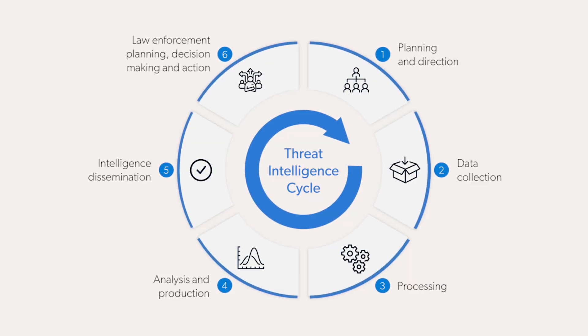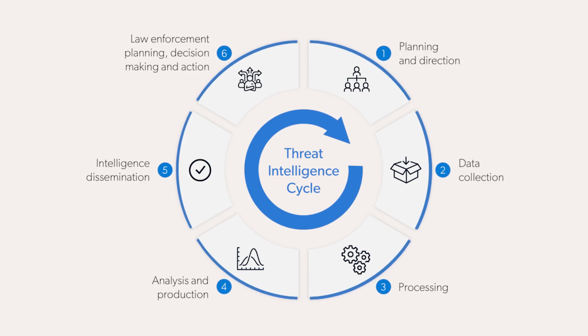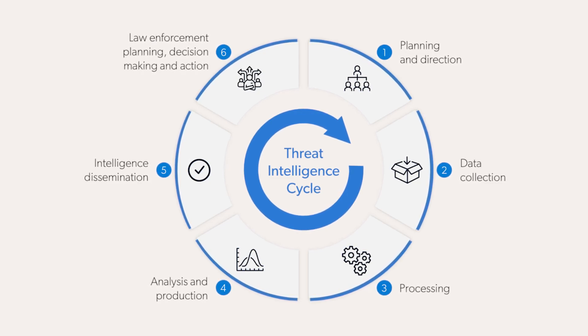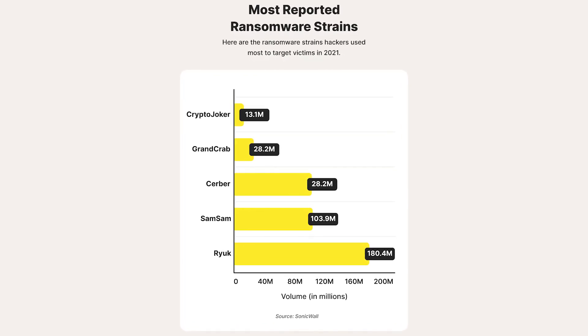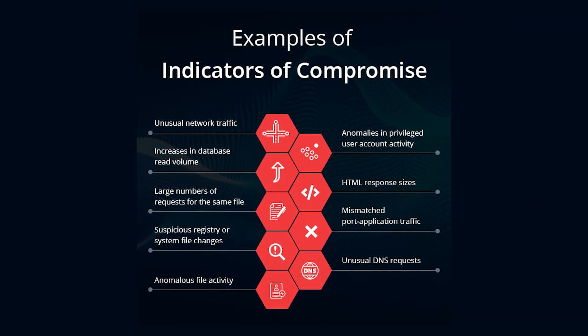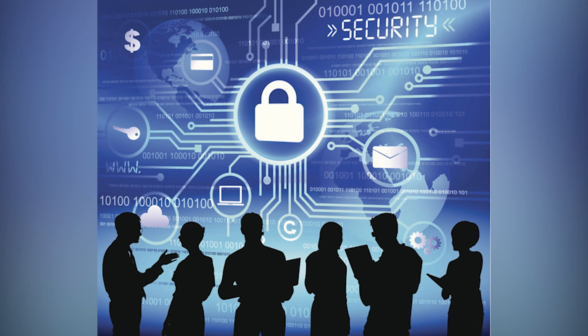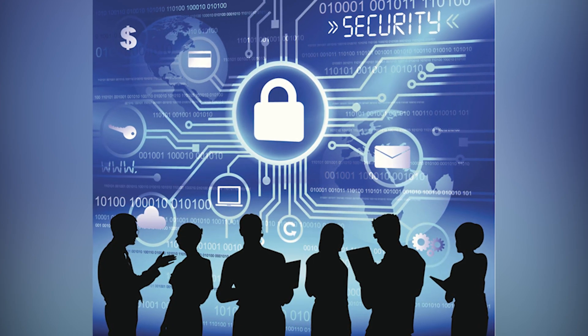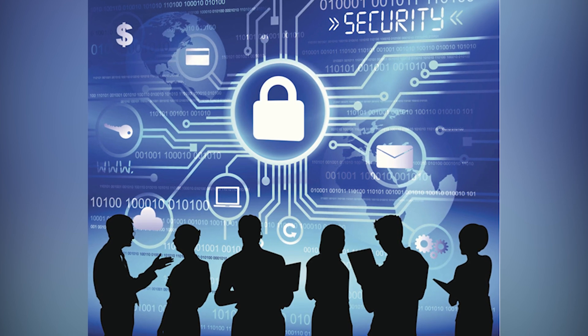Another detection method would be through threat intelligence, which involves gathering and analyzing information about potential cybersecurity threats. By integrating threat intelligence into ransomware detection systems, organizations can benefit from the collective knowledge of the cybersecurity community. This includes information on known ransomware strains, their tactics, techniques, and procedures, and indicators of compromise, also known as IOCs. Threat intelligence enhances the accuracy of detection by providing context and real-time updates on the latest threats. Collaboration within the cybersecurity community is essential for sharing threat intelligence and collectively strengthening defenses against ransomware attacks.